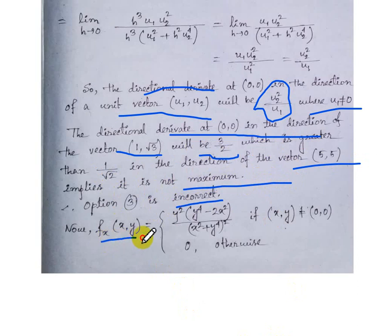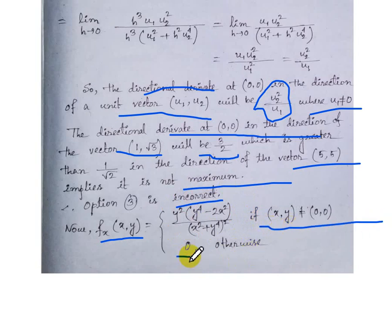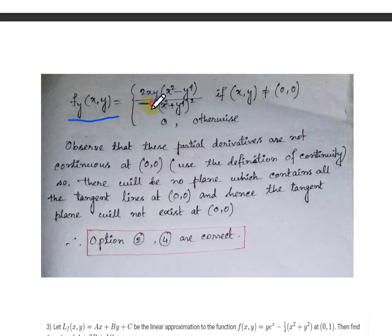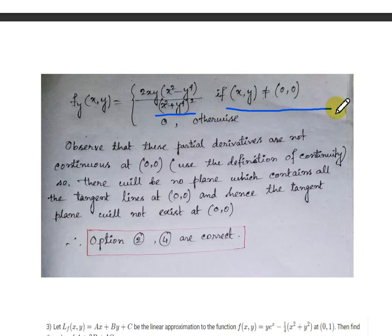Computing the partial derivatives: fx(x,y) = [y⁴ - 2x²] · y² / (x² + y⁴)² if (x,y) ≠ (0,0), and 0 otherwise. Similarly, fy(x,y) = 2xy(x² - y⁴) / (x² + y⁴)² if (x,y) ≠ (0,0), and 0 otherwise.